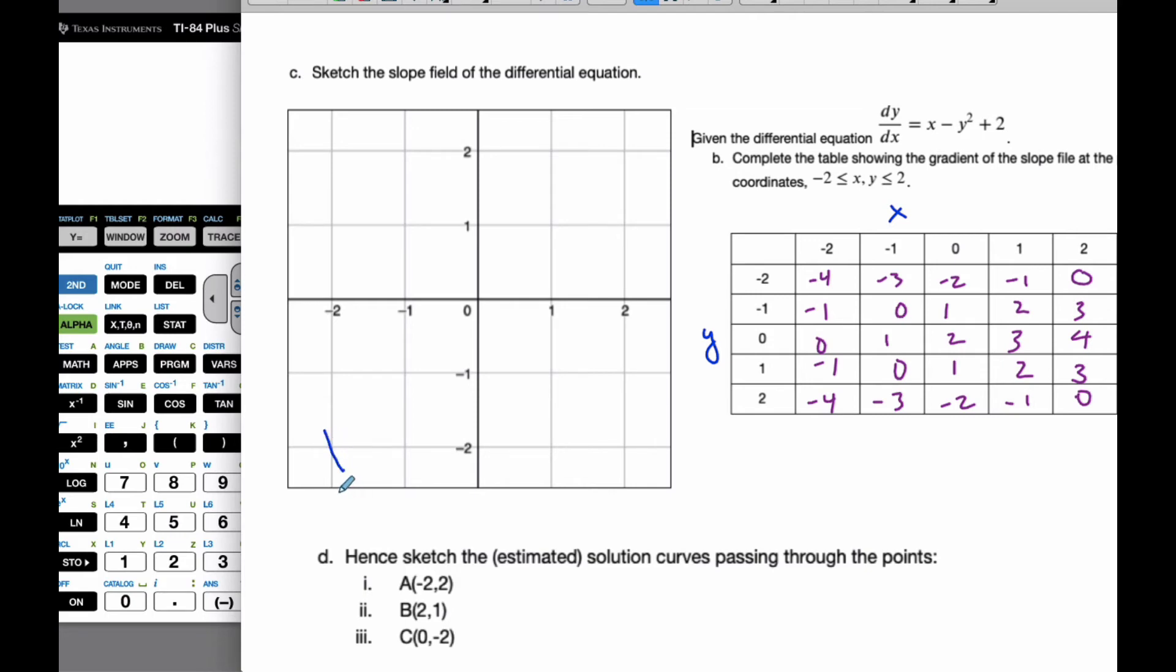And you just estimate the negative 4. And then for the x value of negative 1, the y value of negative 2, I get a slope of negative 3, which is a little less steep. Similarly, I get negative 2 for the next one, which is a little less steep again. And then negative 1 is exactly cutting the angle in half. And then here I get 0.